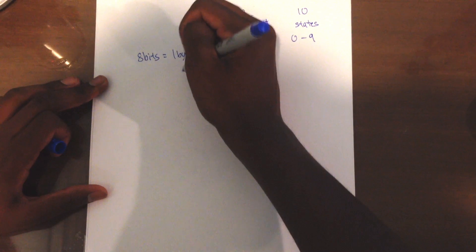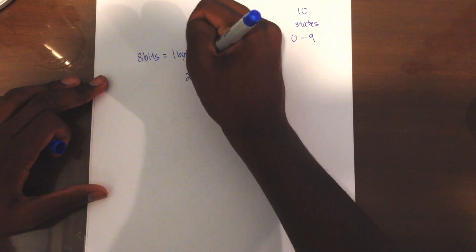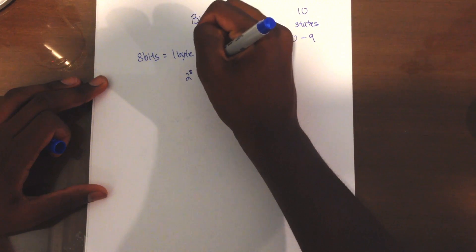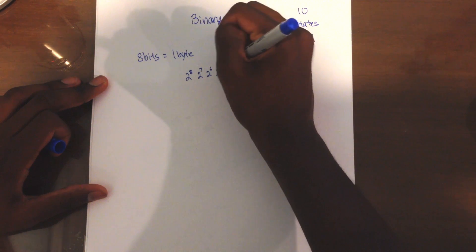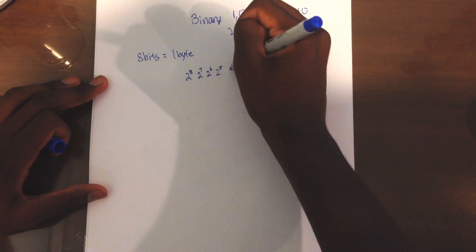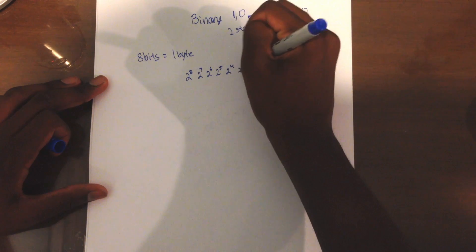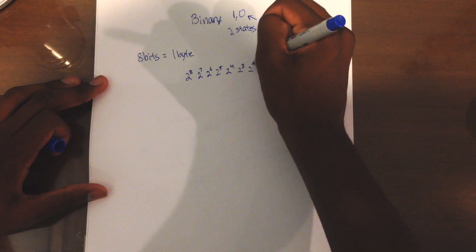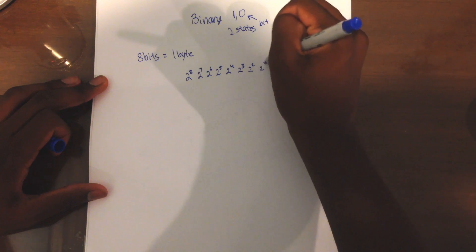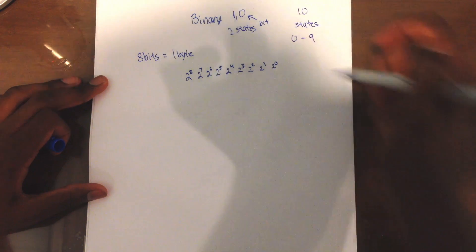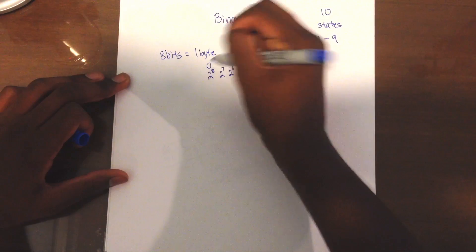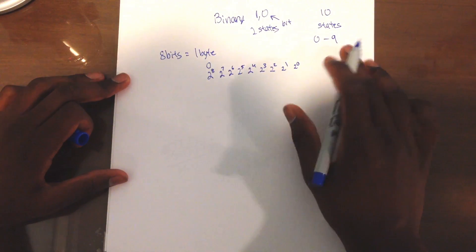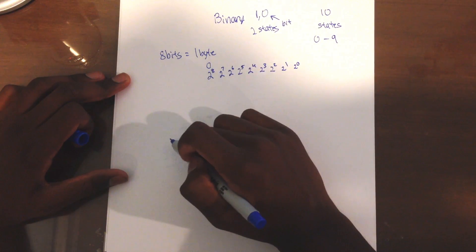Now how does that actually work? The way you do it is you have values like this: 2 to the 8, 2 to the 7, 2 to the 6, 2 to the 5, 2 to the 4, 2 to the 3, 2 to the 2, 2 to the 1, and 2 to the 0. If there is a 0 in a position, that means that value is not counted.